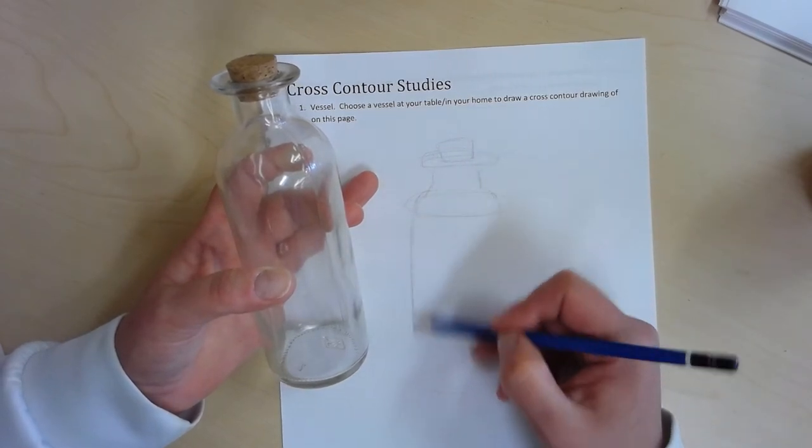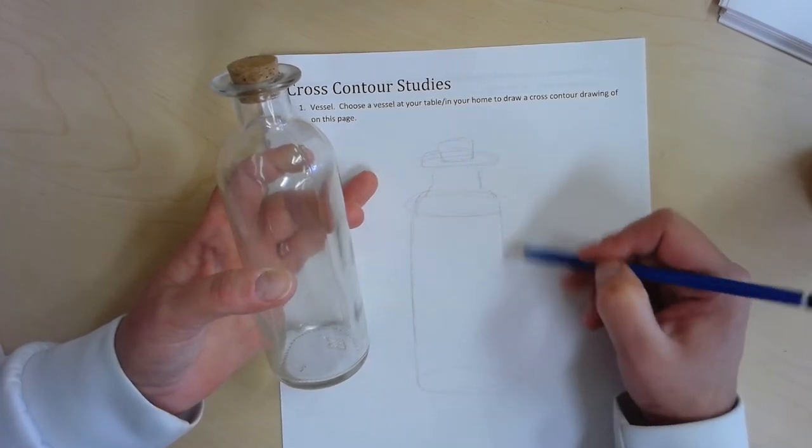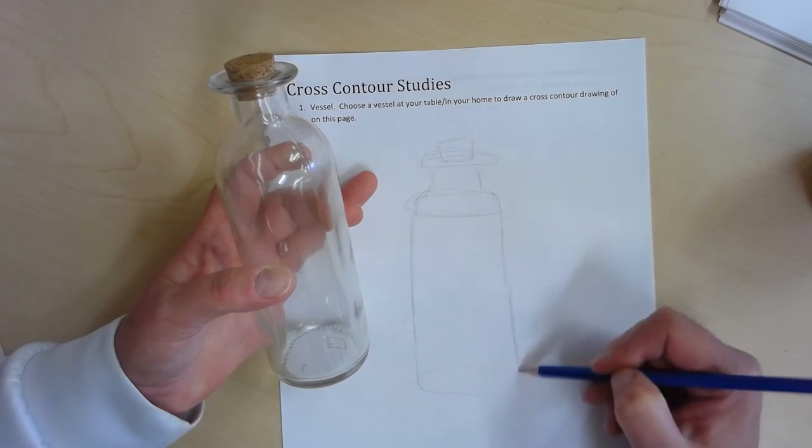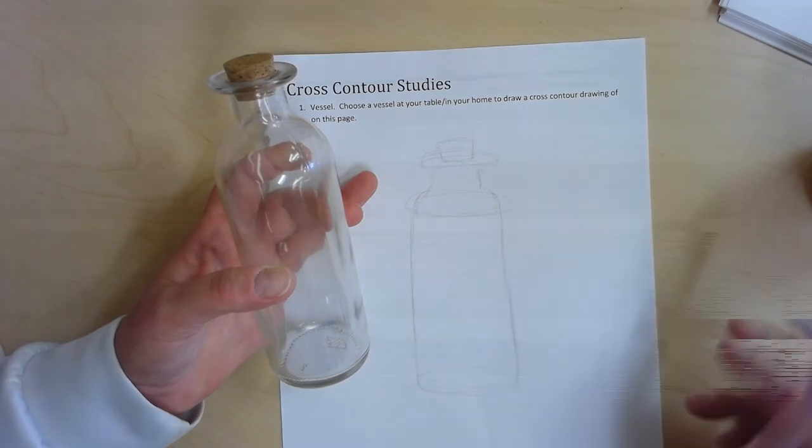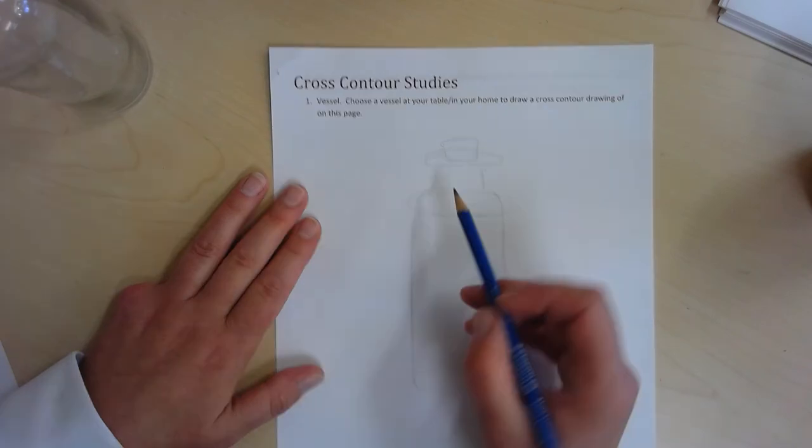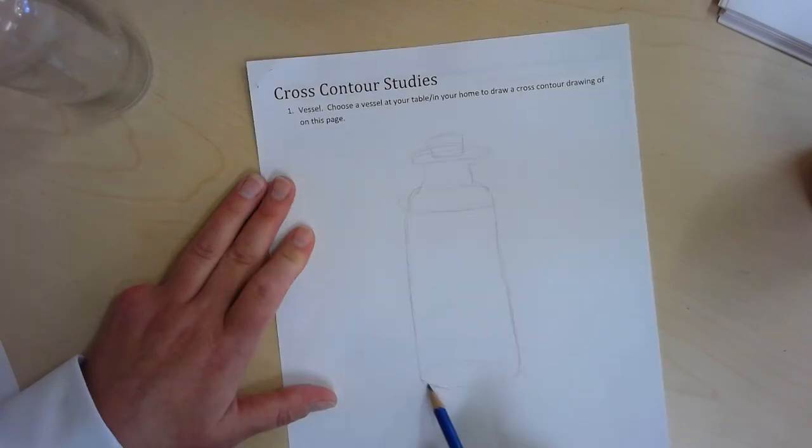contour lines, just the outline of the bottle, I'll then go in with my cross contour lines. Let's just pretend that this is good to go. Now I'll come across. At the bottom of the vessel, if the vessel has a rounded bottom, you have to curve the bottom line. It's not straight across—that's incorrect.